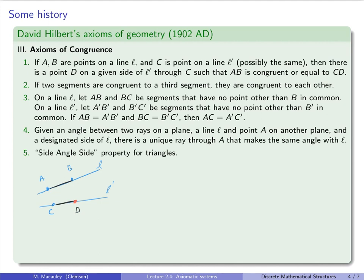2. If two segments are congruent to a third segment, they are congruent to each other. So let's suppose that those two segments that I just drew are both congruent to E and to F. Then they have to be congruent to each other.